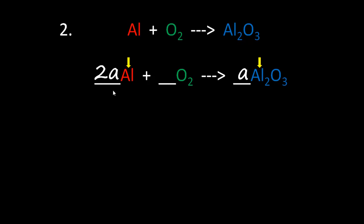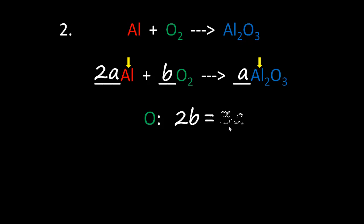We have 2a aluminum atoms, so to balance aluminum we put 2a on the other side. Step two: we put another letter 'b' in the remaining blank line. Step three: we balance the oxygen atoms. We have 2b oxygen atoms on one side equals 3a on the other side. This is the simplest equation, so no need to simplify. From this equation, b equals 3 and a equals 2.